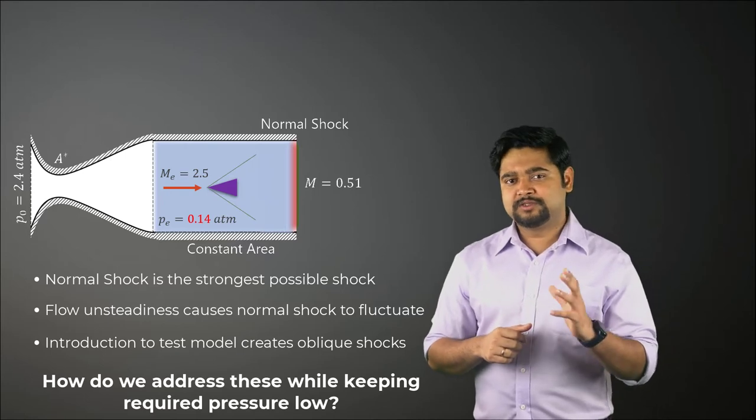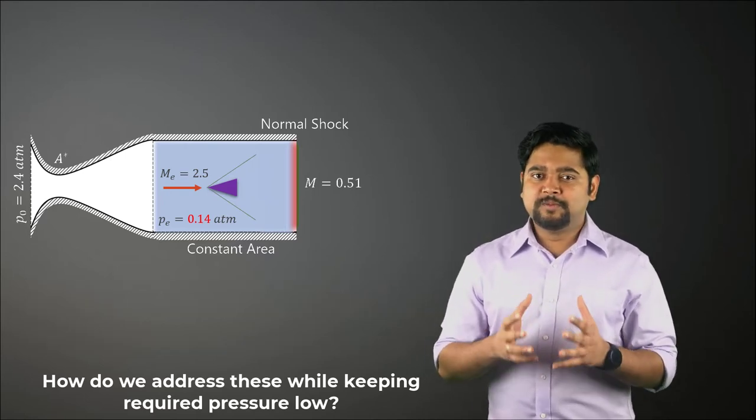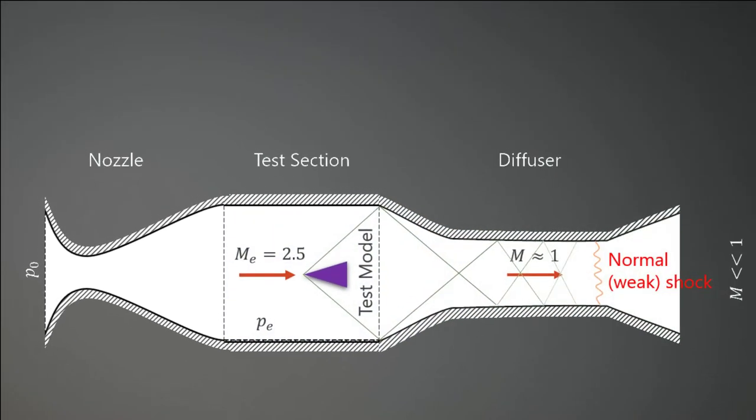Let us replace the normal shock diffuser with an oblique shock diffuser as shown here. In this setup, we have a converging-diverging diffuser which slows the flow down to a low subsonic speed.